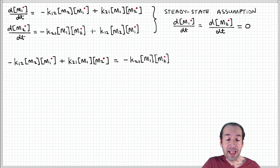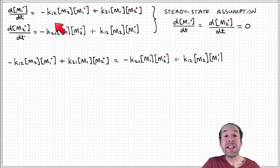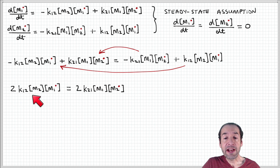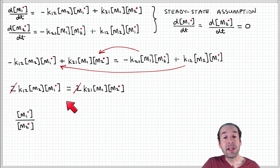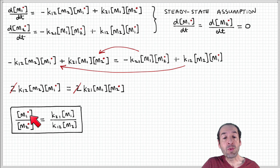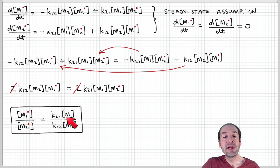When we apply the steady state assumption, we can set the two rate equations equal and combine like terms. We can factor out a common multiplier of 2, and we then get an expression for the ratio of active chains ending in monomer 1 to active chains ending in monomer 2. That ratio equals the concentration of monomer 1 relative to monomer 2 times the ratio of the corresponding rate constants.